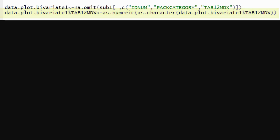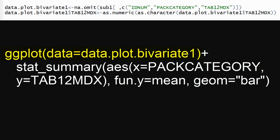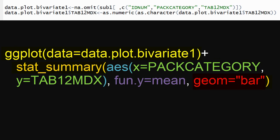Now we're ready to plot. As always, we start with the ggplot function and supply the dataset that we wish to plot — in this case, data.plot.bivariate1. Then we add the stat_summary function and identify the variables that go on the x and y axes in the aesthetics command. We specify that we're calculating the mean value of the response variable by each level of the explanatory variable and we specify a bar plot. To make this plot more interpretable and appropriate for presenting our results, we should add labels.